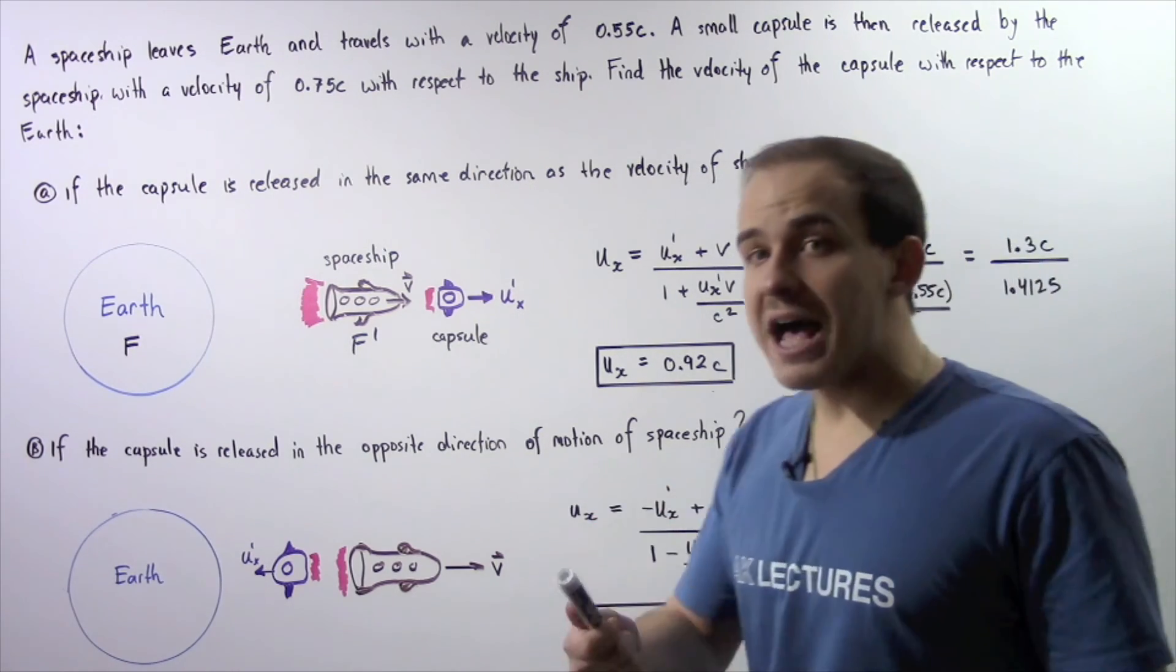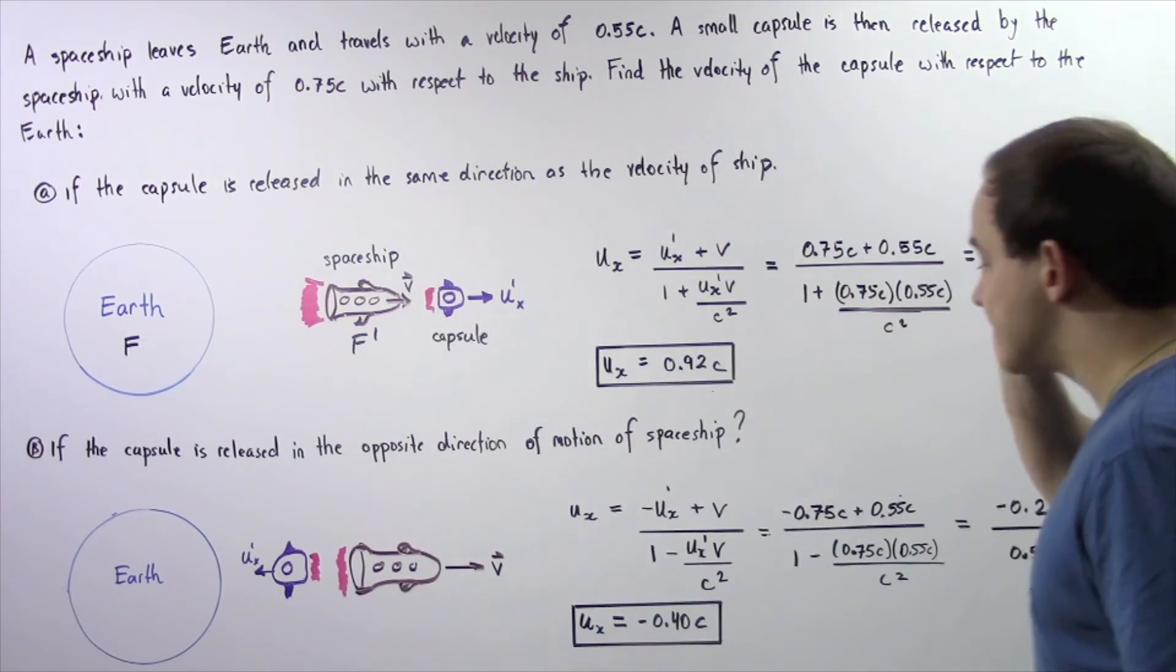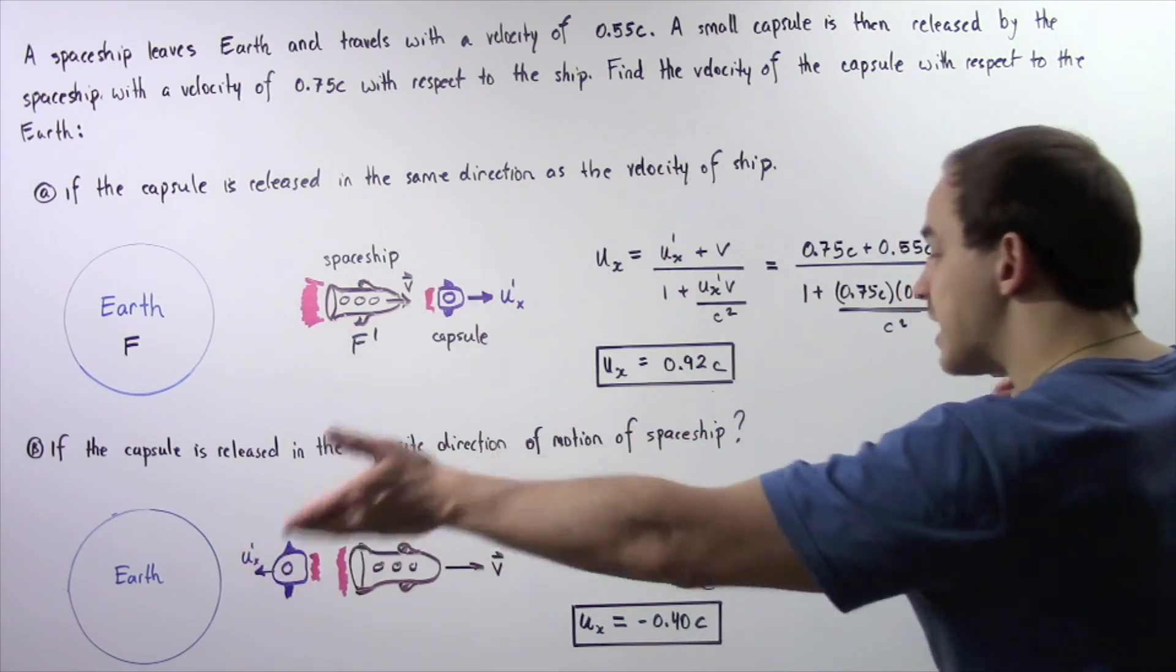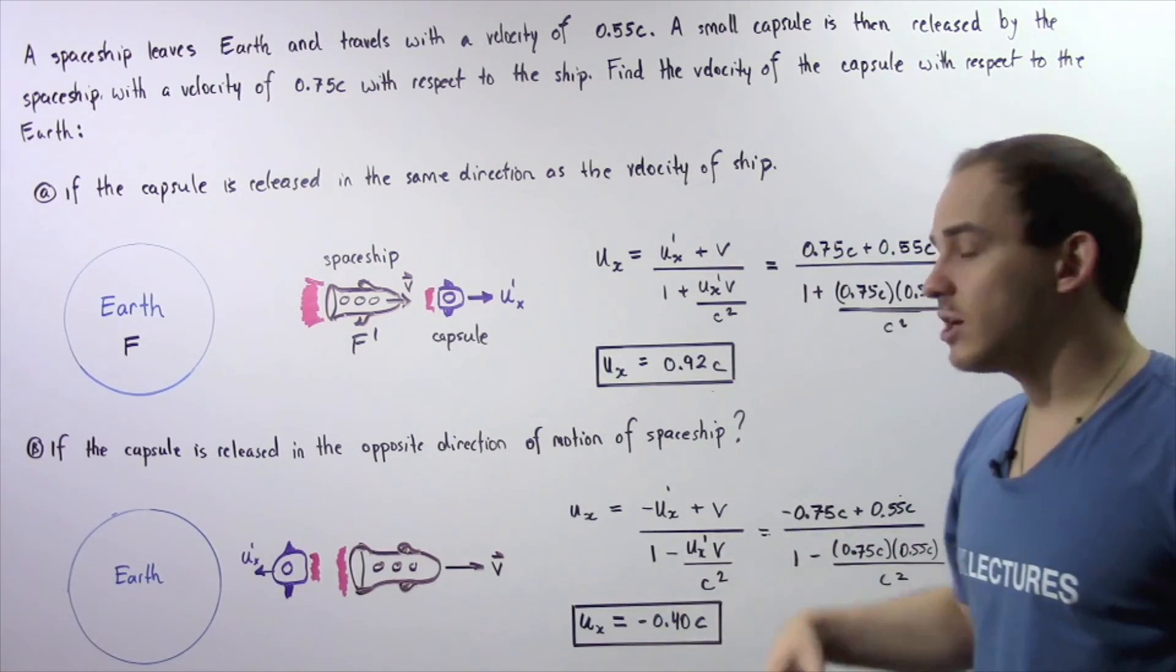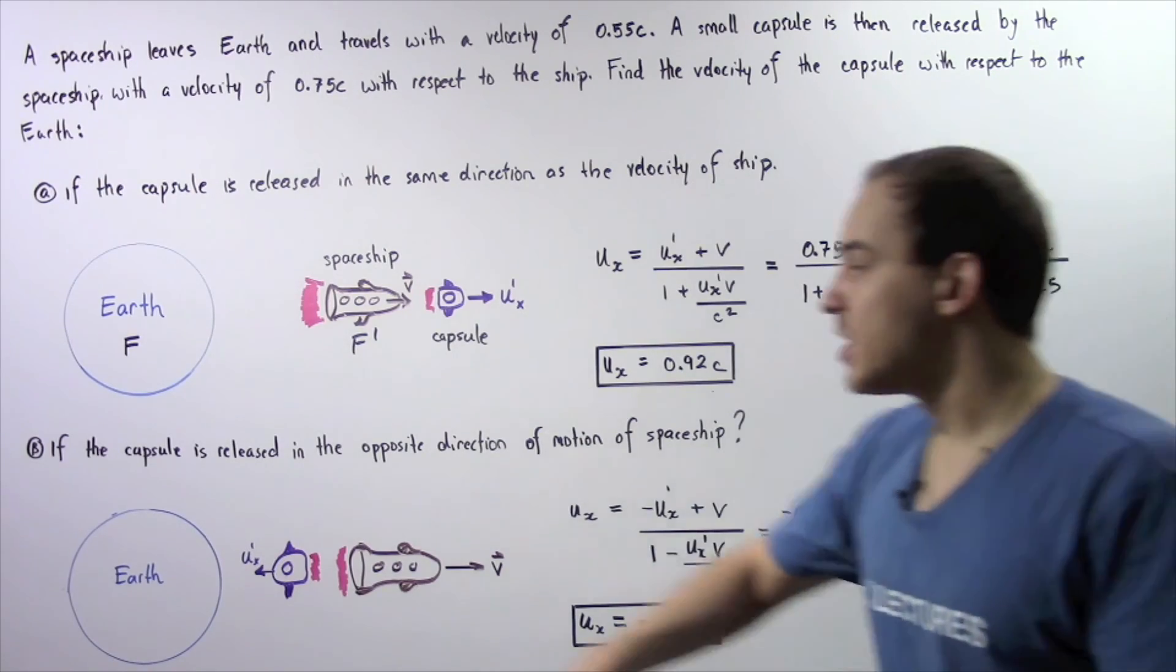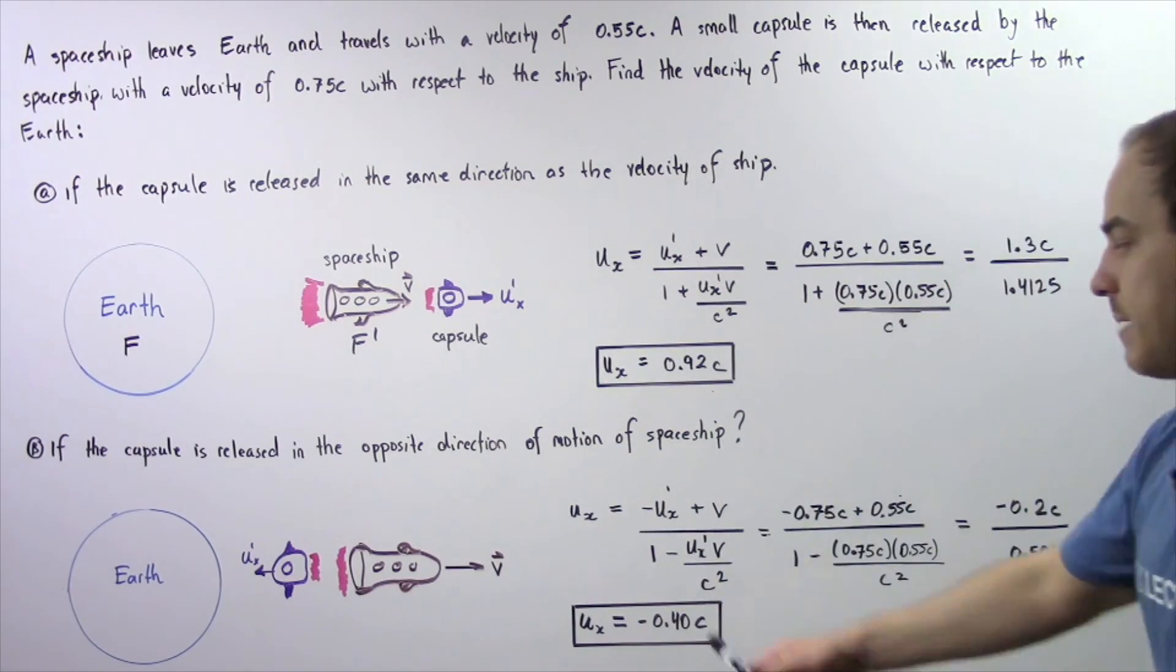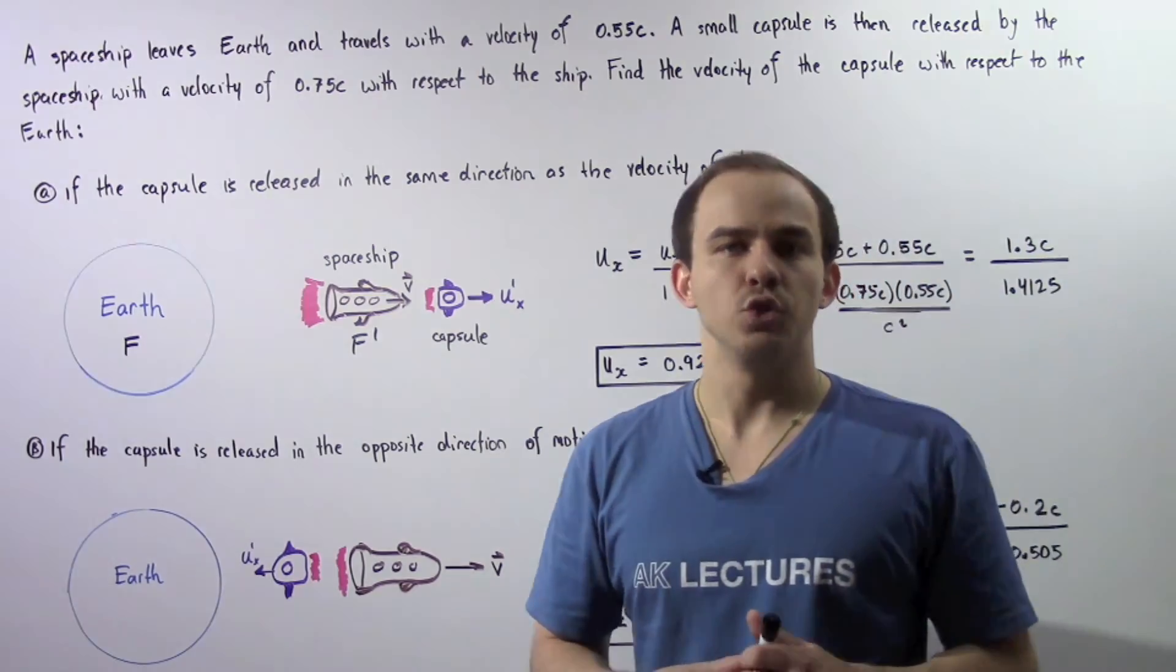The negative simply means the velocity of the capsule is in the negative direction along the x-axis toward the Earth and away from our spaceship. That means the magnitude of the velocity of the capsule with respect to the Earth is about 40% of the speed of light in a vacuum.